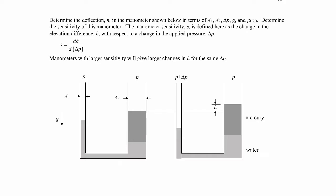The sensitivity of a manometer S is defined as how much the height changes, dh, as you make a small change in the pressure, delta P. Generally you'd want a larger sensitivity so any small pressures show up as large changes in height — you want a large dh for a small d(delta P), so that ratio is large.